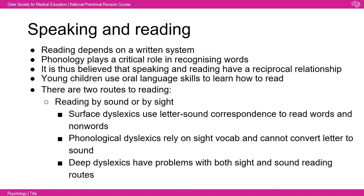With dyslexia, depending on the type, you have difficulties reading by sight or sound. Surface dyslexics use letter-sound correspondence to read words and non-words, phonological dyslexics rely on sight vocabulary and cannot convert letters to sounds, and deep dyslexics have problems with both sight and sound reading. This neatly demonstrates the relationship between speaking and reading and how they are inherently linked.